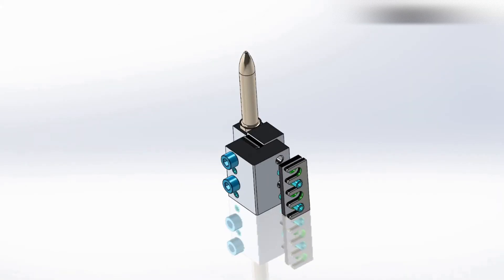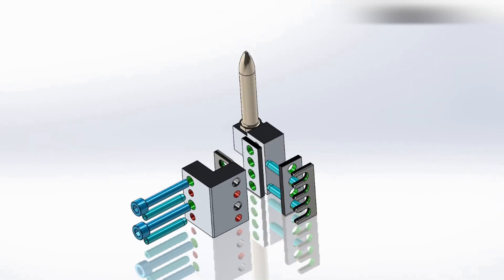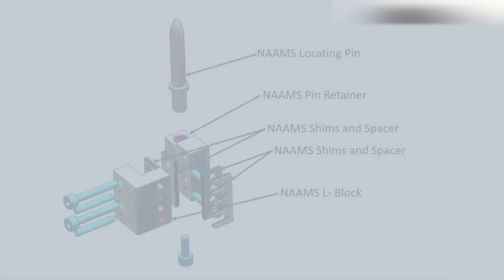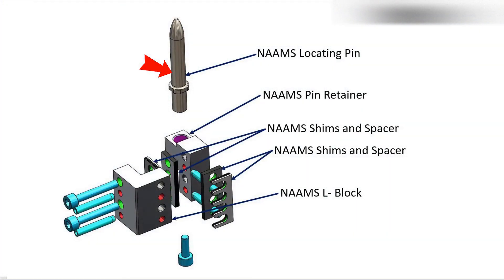Let's see the assembly of the NAMS 1R pin mounting. NAMS locating pin, NAMS pin retainer, NAMS shims and spacer, 5mm shim pack and 5mm spacer, NAMS L block.